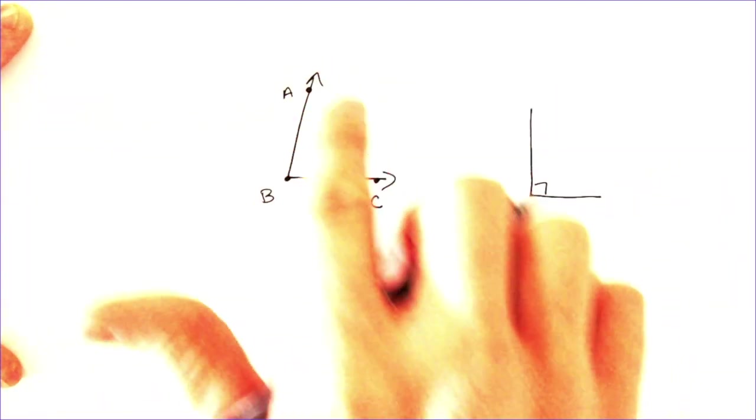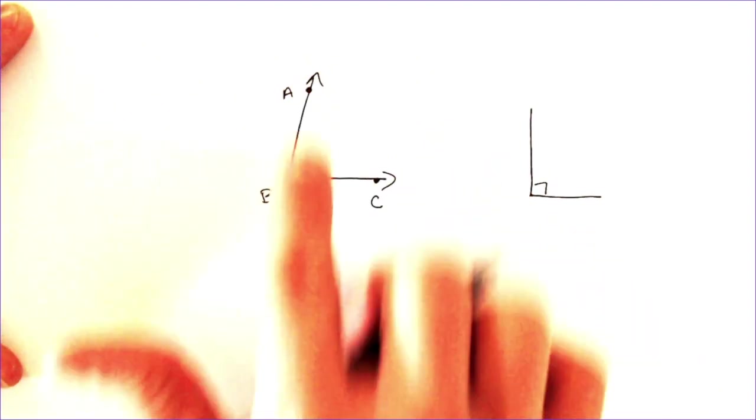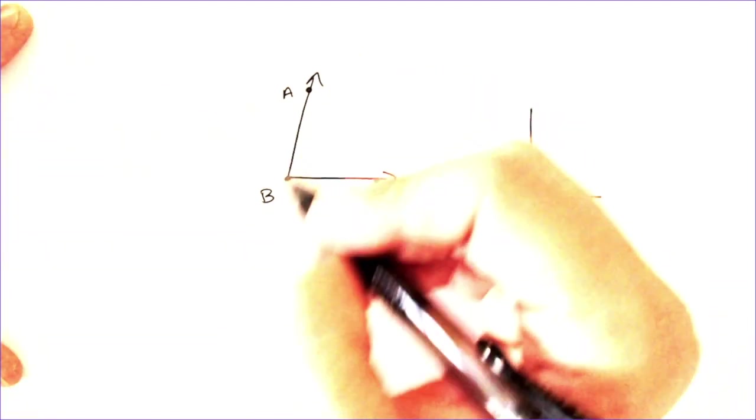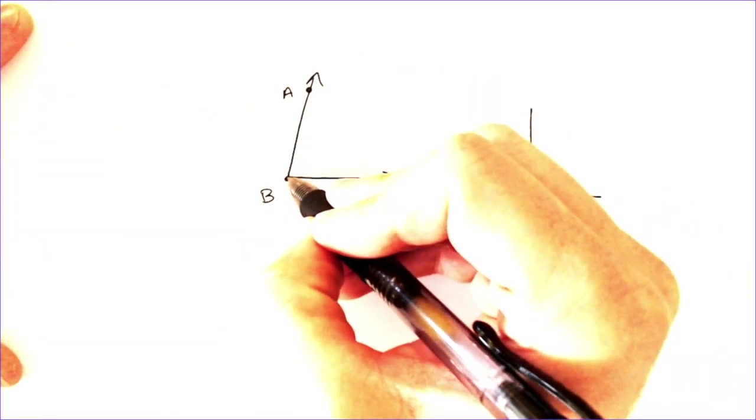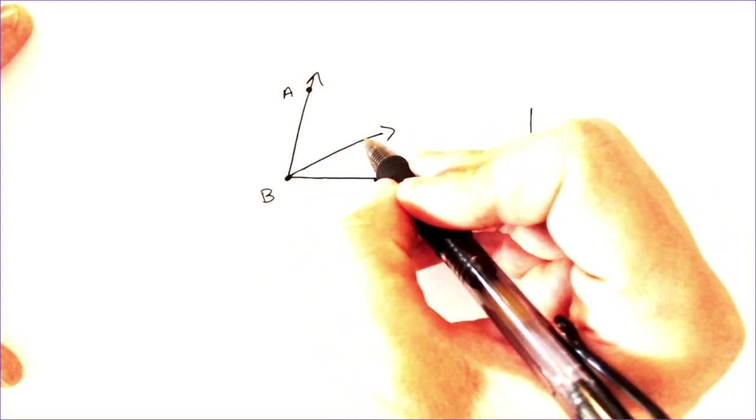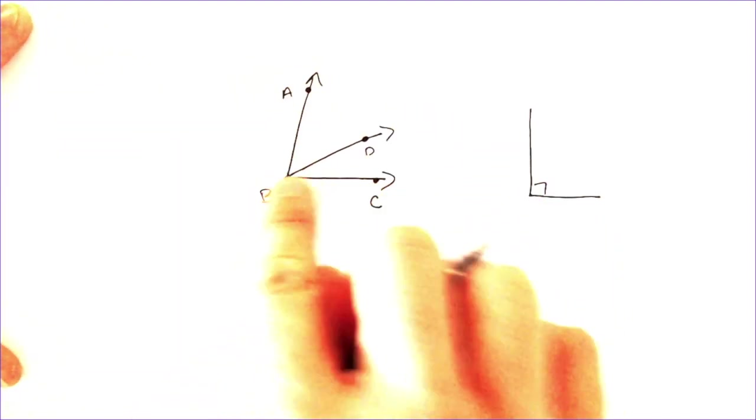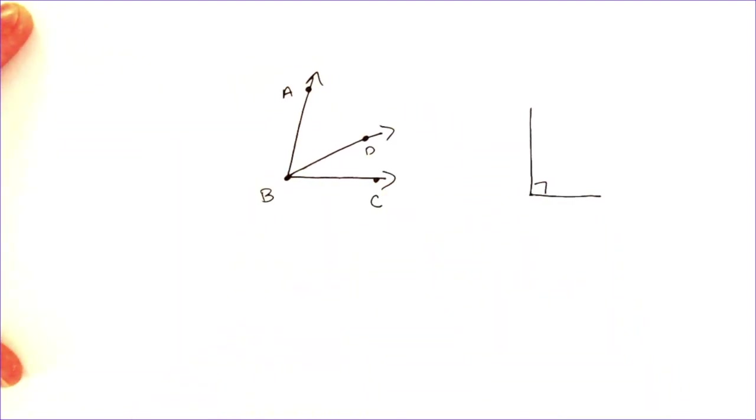So, mine's an acute angle, so it's just a little bit smaller than 90 degrees. It's probably around 70 degrees. Now, the angle addition postulate is something that means that if you were to take this angle, and if I were to draw a ray going from B to, let's call it D, I have now taken my original angle ABC, and I have kind of divided it up.